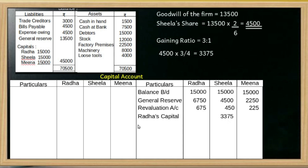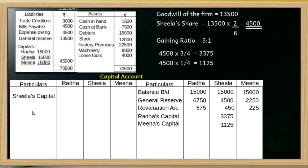By Meena's Capital Account, we have to pay for the goodwill adjustment. General entry: Radha's Capital Account and Meena's Capital Account debit to Sheela's Capital Account. Sheela's Capital Account is credited. At the same time, Radha's and Meena's Capital Accounts are debited to Sheela's Capital Account.